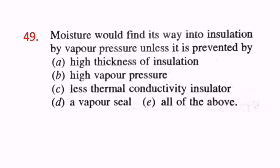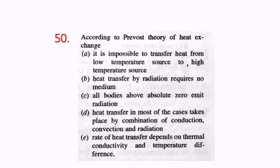Question 49: Moisture would find its way into insulation by vapor pressure unless it is prevented by a vapor seal. A vapor seal is required. D is the correct answer. Question 50: According to the prevost theory of heat exchange, all bodies above absolute zero — that is, above minus 273 degrees Celsius — emit radiation. C is the correct answer.